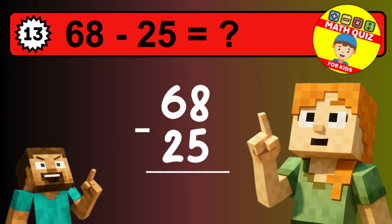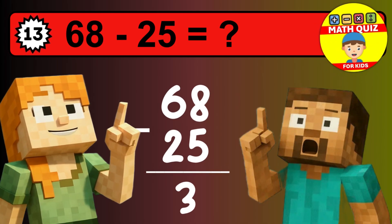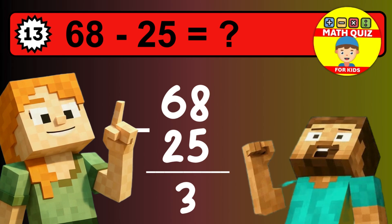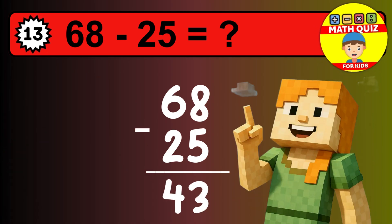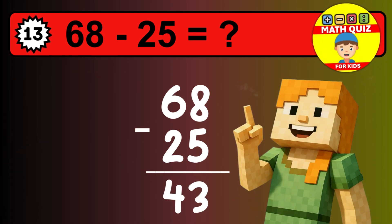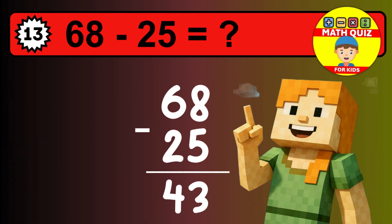We start with the units: 8 minus 5 is 3. Then we go to the tens: 6 minus 2 is 4. The final answer is 43.